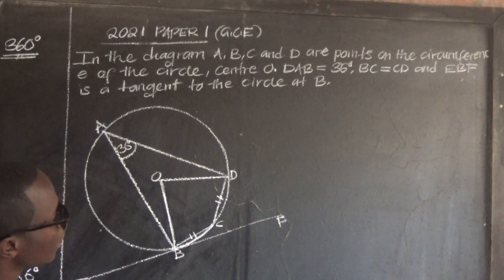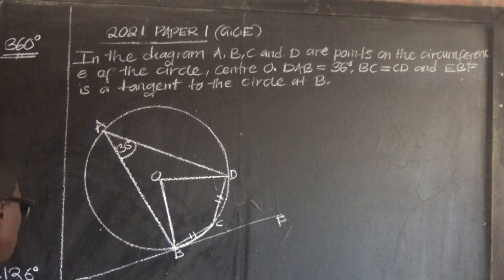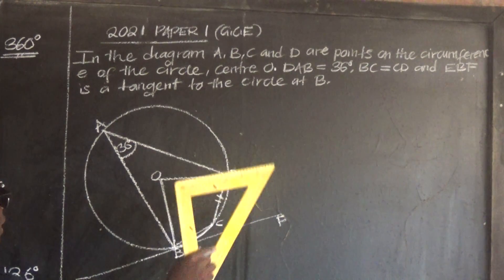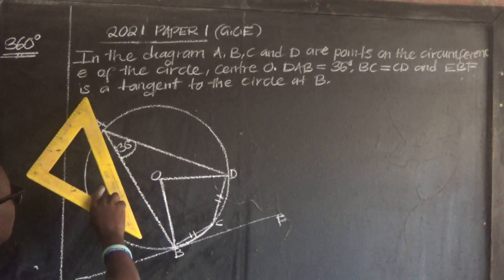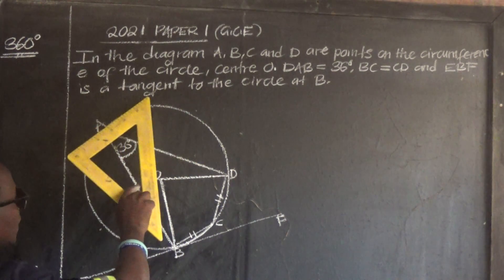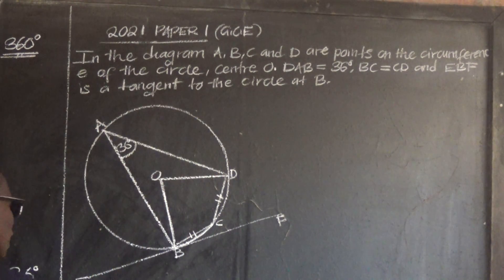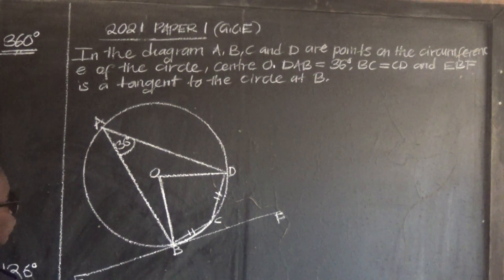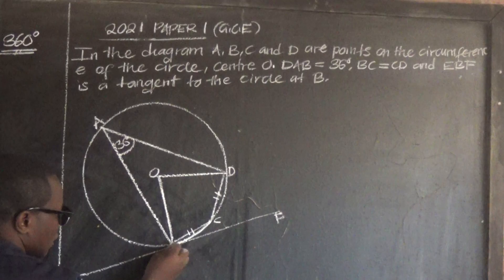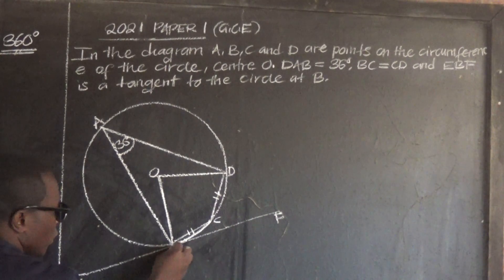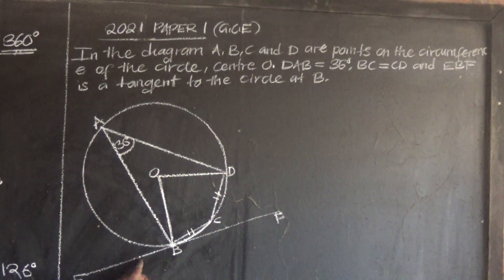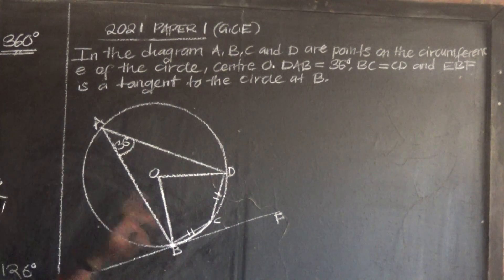And EBF — EBF is a tangent to the circle. So EBF is a tangent to this circle, and it touches at a single point of the circle, which is point B. So EBF is a tangent to this circle, touching the circle at point B.